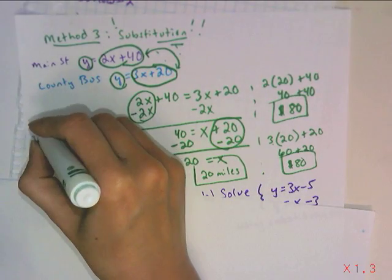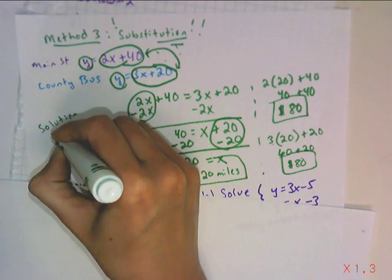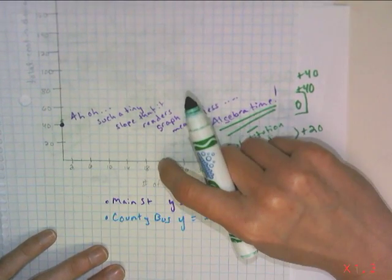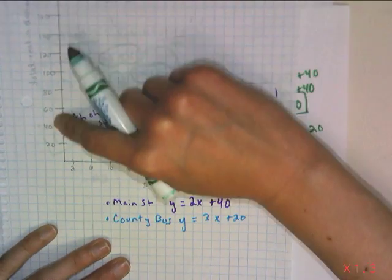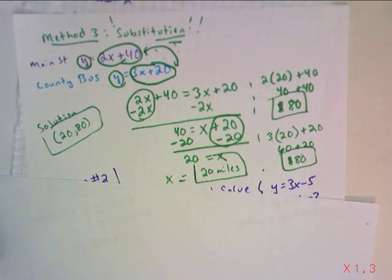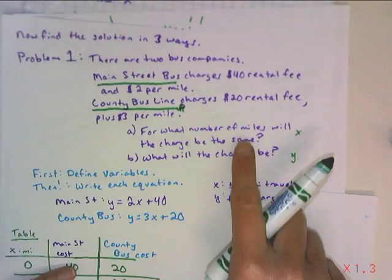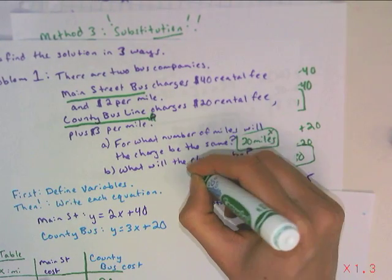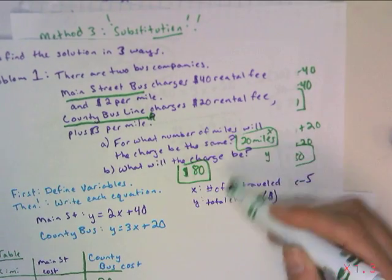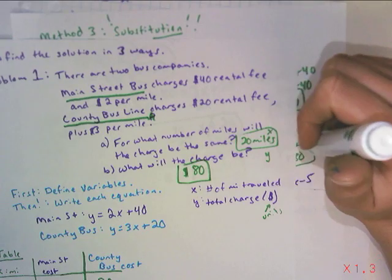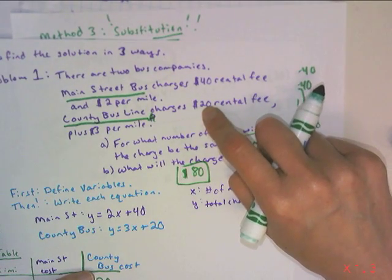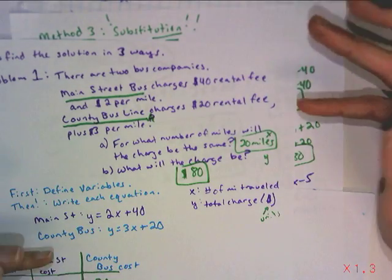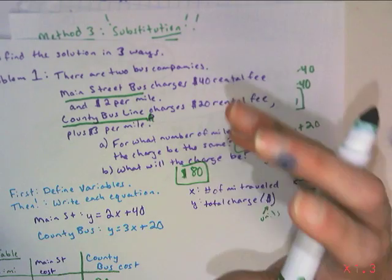If we wanted to be super vigilant, we would also test it with the second equation. 3 times 20 plus 20, and we should be getting the same cost. Because if this was a table when x is 20, the cost of these two companies are the same. 3 times 20 is 60, plus 20, there it is. At the 20th mile, both of these companies are going to be charging $80. So our solution is the ordered pair (20, 80). Answering the question: for what number of miles would the charge be the same? 20 miles. And what will the charge be? $80. Less than 20 miles, you're probably going to go with the lower startup fee. But at 20 miles, they switch positions.